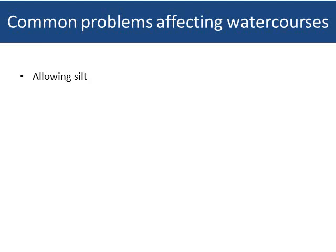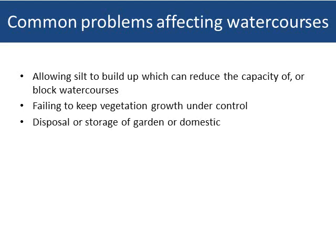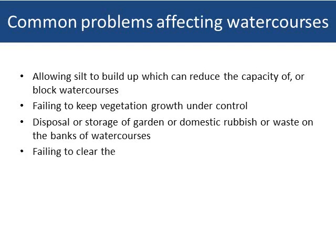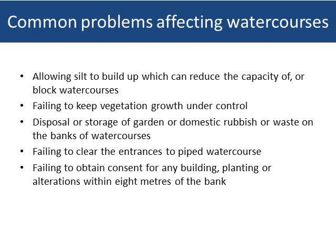Common problems affecting watercourses are: allowing silt to build up, which can reduce the capacity of or block watercourses; failing to keep vegetation growth under control; disposal or storage of garden or domestic rubbish or waste on the banks of watercourses; failing to clear the entrances to piped watercourses; and failing to obtain consent for any building, planting or alterations within 8 metres of the bank.